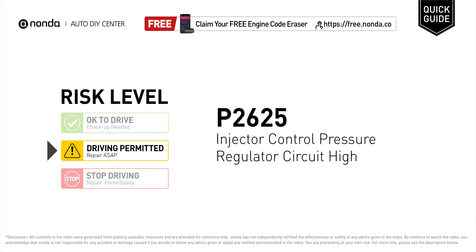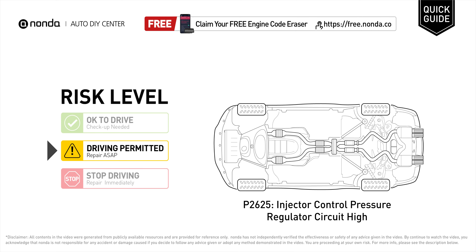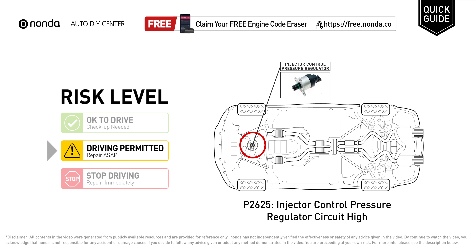P2625 is a diagnostic trouble code for injector control pressure regulator circuit high. Under this circumstance, short distance driving is permitted but your vehicle should be repaired as soon as possible. It means the PCM has detected a variation in the voltage coming from the injector control pressure regulator circuit that is above the normal limit set by the vehicle manufacturer.